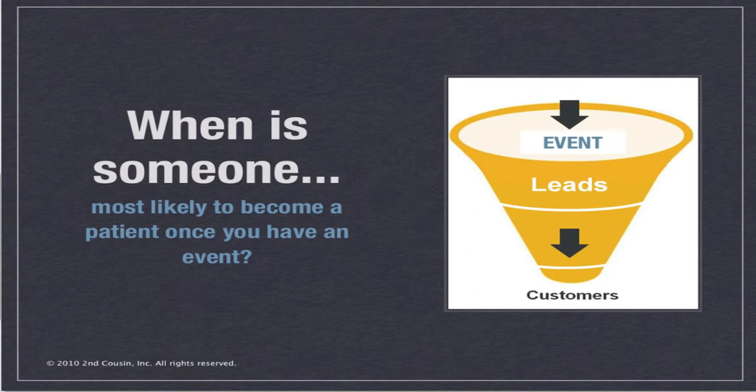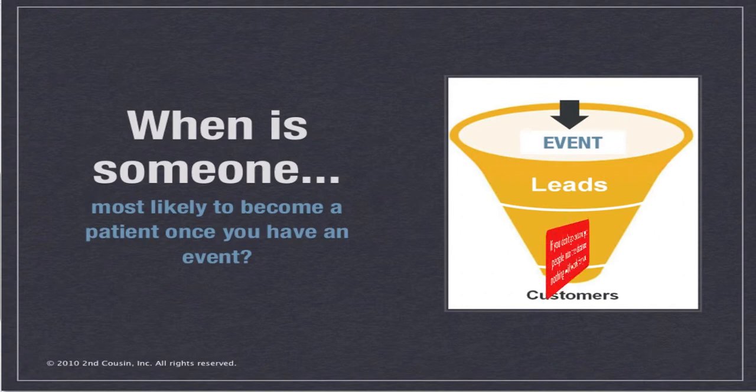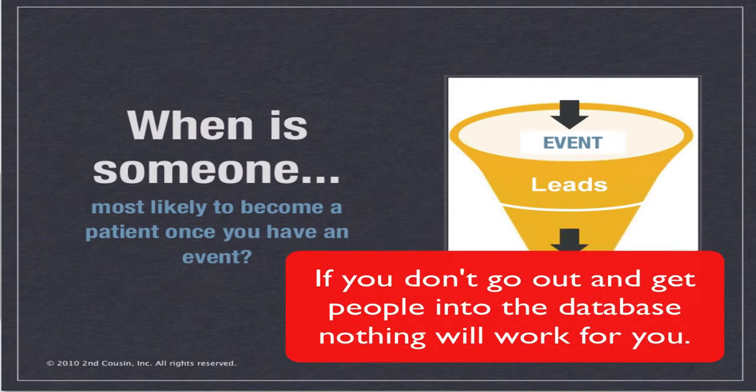Is it three months down the road, or six months, or nine months down the road? No. They're hot now. So the key is as soon as you get their information — as soon as they give you that name and email address. The key to any game is you must get out there and get the names and email addresses. You can't do follow-up to nobody.